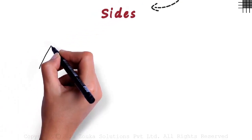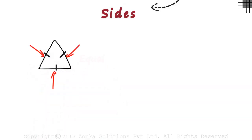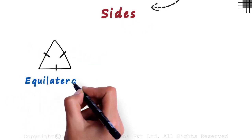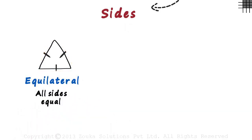Based on sides, the first kind of triangle is a triangle which has all its sides equal to each other. To show that they are equal, we put the same mark on each of the sides. This tells us that all three sides are equal. Such triangles are called equilateral triangles. Remember, all sides have to be equal. The word itself tells you that — equi means equal and lateral means side.